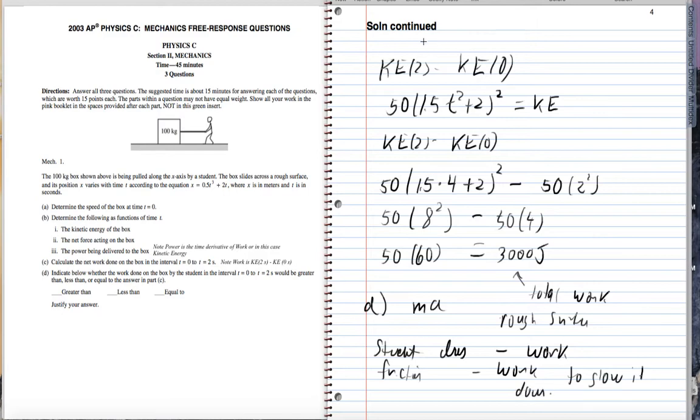So what that means is, in order to speed this box up from 0 to 2 meters per second, the student has to be doing more work than the friction. Okay actually, let me write that a little bit differently. I will say the work done by the student is greater than the work done by the friction, given the fact that the student is doing work to speed it up and friction is doing work to slow it down. Yet the box speeds up. That means the student is doing work to overpower the work done by friction. And therefore, the net work is 3,000 joules. So the student is doing, say, 5,000 joules worth of work, I'm just making that number up. And then the friction would be doing 2,000 joules to give you 3,000. So the idea being the student has to do more work in order to speed the box up.